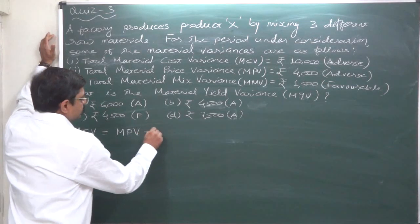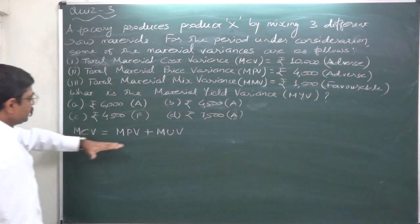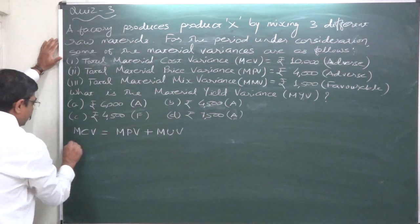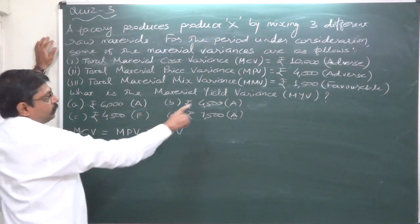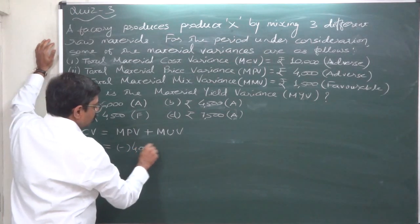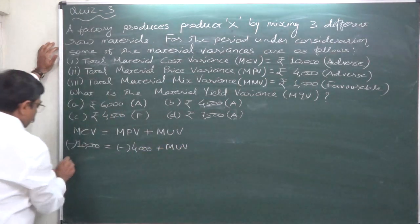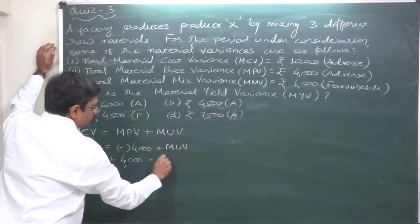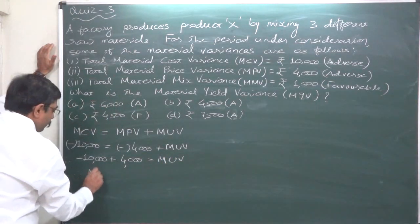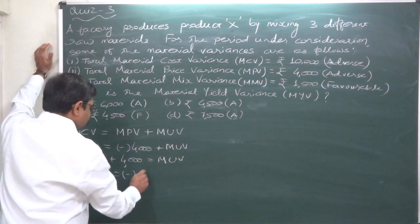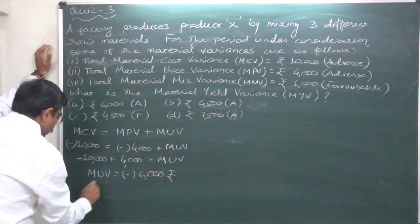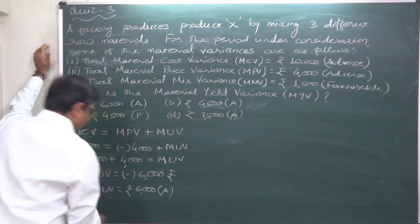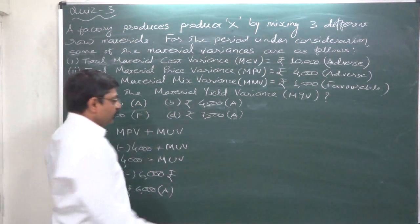The first reconciliation formula is: Material Cost Variance equals Material Price Variance plus Material Usage Variance. Both MCV and MPV are available, so: minus 10,000 equals minus 4,000 plus Material Usage Variance. Therefore, Material Usage Variance equals minus 10,000 plus 4,000, which gives us minus 6,000. So material usage variance is rupees 6,000 adverse.